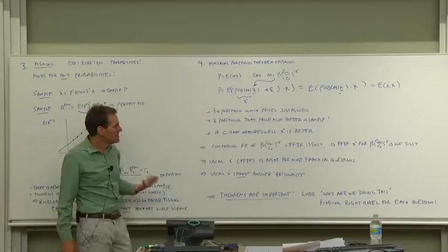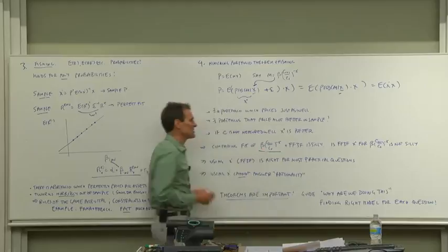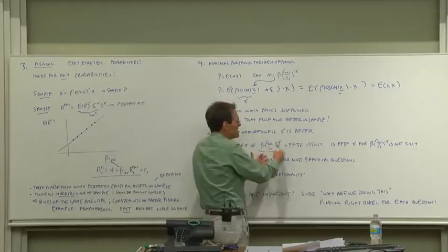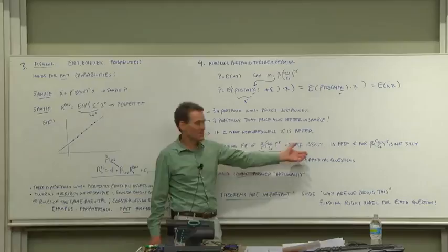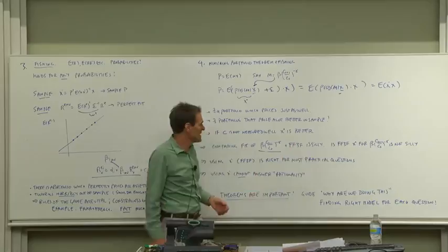So what do these easy-to-see theorems tell us about how we do asset pricing? First, it tells us a common exercise if you have a utility function or consumption growth, a common exercise is to run a horse race. Does my discount factor beat the Fama-French three-factor model or whatever portfolio-based model is current?